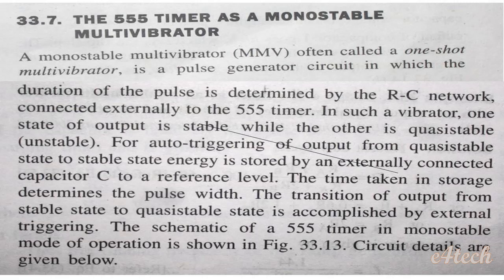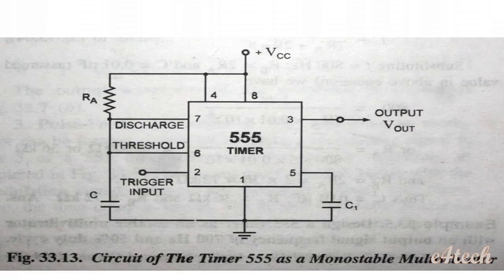This is the 555 timer configured as a monostable multivibrator. We can see the VCC and ground pins. The capacitor C1 is connected, and the output voltage is at pin 3. This is the pin diagram and circuit arrangement of the 555 timer for monostable multivibrator operation.